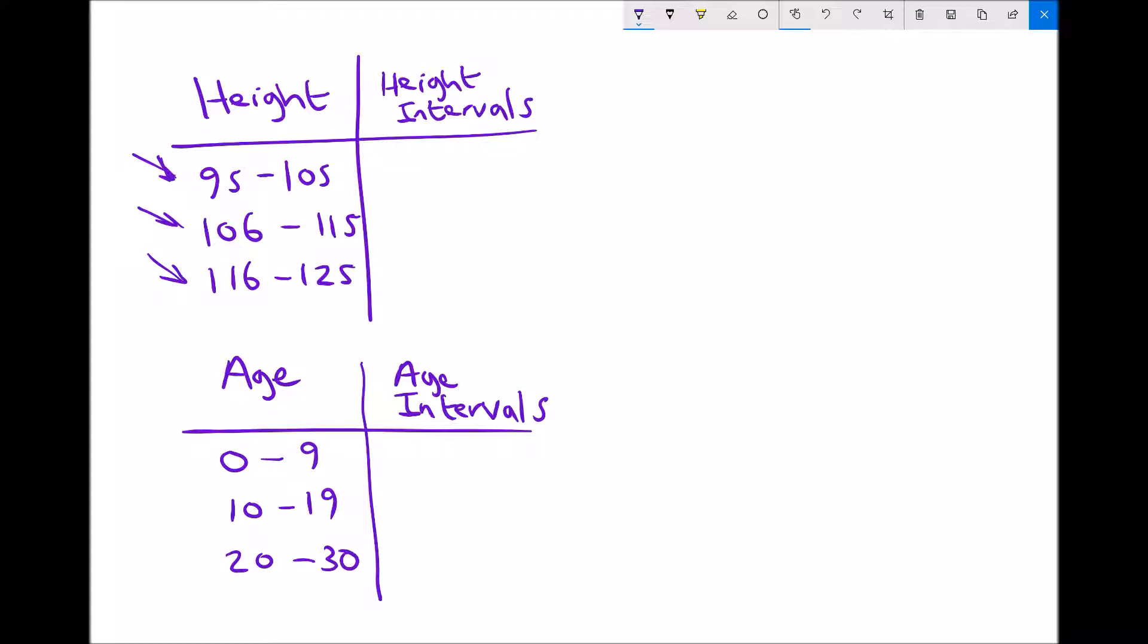So our first group will be for people who are between 94.5 centimeters but less than 105.5 centimeters. Any decimal greater than 94.5 will round to 95. So heights of 94.5 centimeters all the way up to 94.999 centimeters will round up to 95 centimeters making that appropriate for that first group.